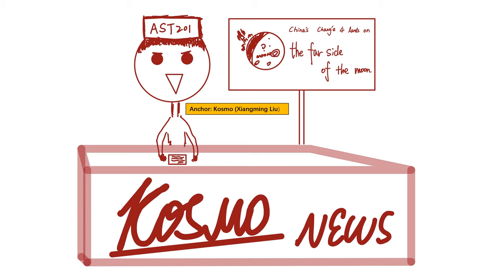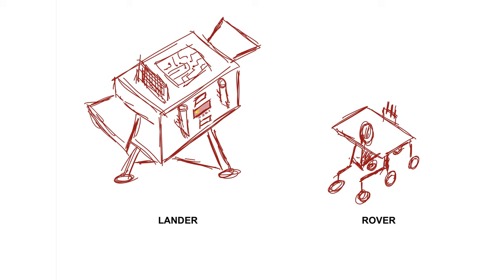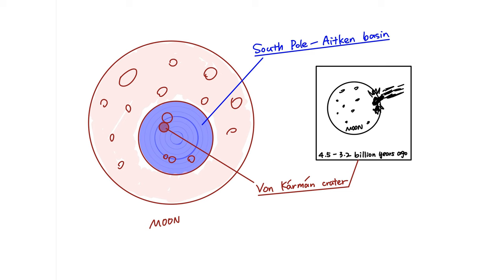The set contains a lander called Chang'e-4 and a rover named Yutu-2. On 3rd January 2019, the world's first successful landing on the far side of the moon took place in Von Karman Crater within the SPA Basin.